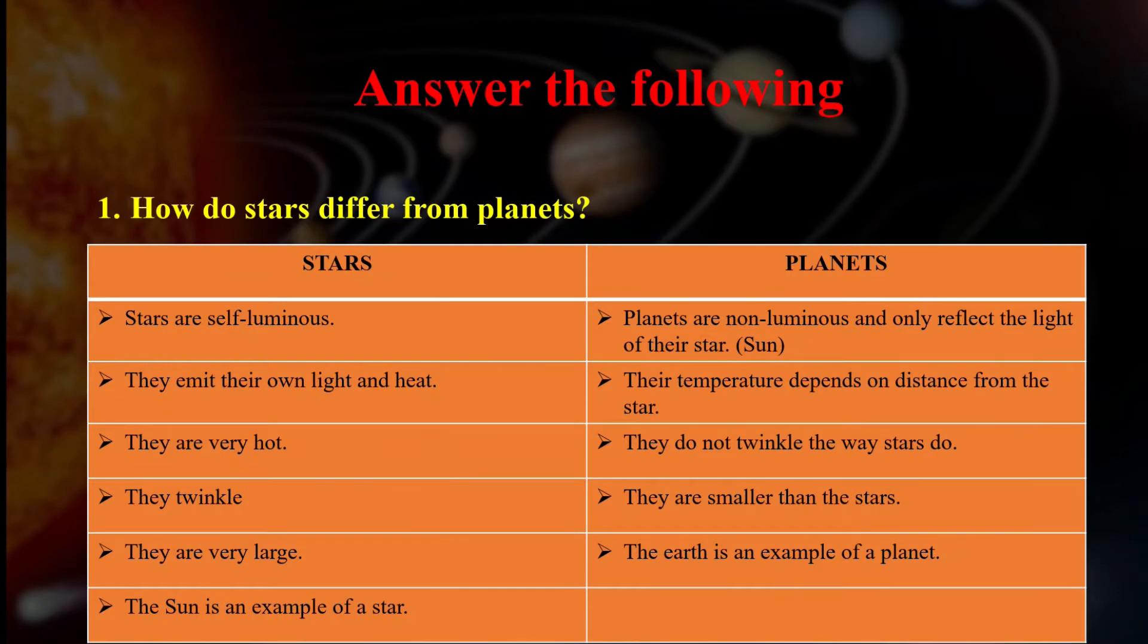Stars are self-luminous, while planets are non-luminous. Stars emit their own light and heat, while planets reflect the light of their star, for example sun. Stars are very hot, while the temperature of the planet depends on the distance from the star. Stars twinkle, planets do not twinkle. Stars are very large, planets are smaller than the stars. The sun is an example of a star, while the earth is an example of a planet.